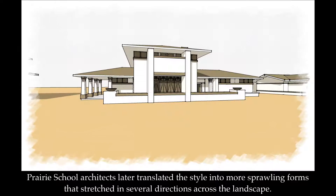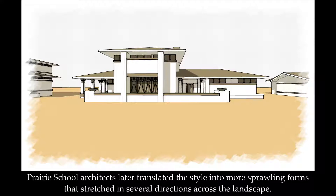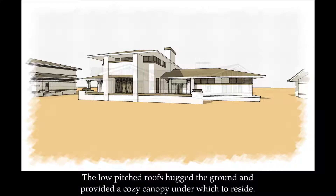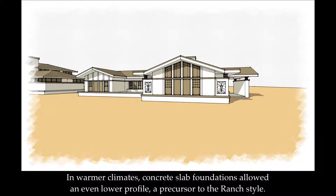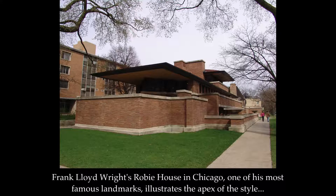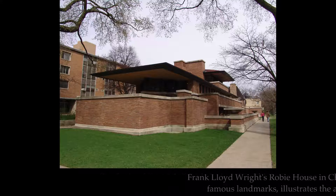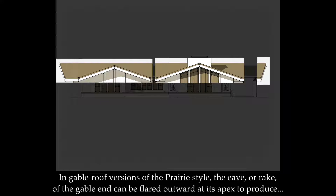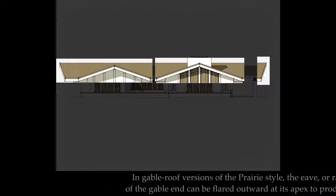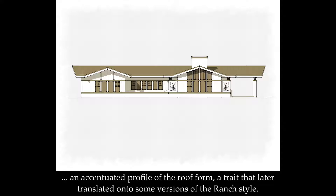Prairie school architects later translated the style into more sprawling forms that stretched in several directions across the landscape. The low-pitched roof hugged the ground and provided a cozy canopy under which to reside. In warmer climates, concrete slab foundations allowed an even lower profile, a precursor to the ranch style. Frank Lloyd Wright's Robie House in Chicago, one of his most famous landmarks, illustrates the apex of the style with its masculine horizontal emphasis and elegantly relaxed forms. In gable roof versions of the prairie style, the eave or rake of the gable can be flared outward at its apex to produce an accentuated profile of the roof form, a trait that later translated onto some versions of the ranch style.